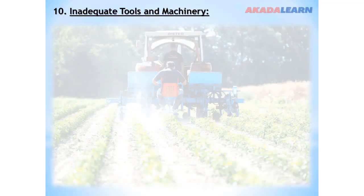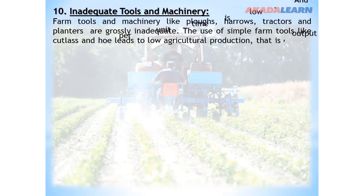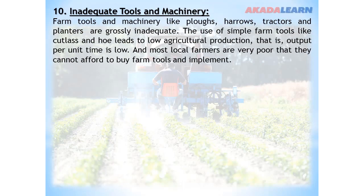Problem number ten: Inadequate tools and machinery. Farm tools and machinery like plows, harrows, tractors, and planters are grossly inadequate. The use of simple farm tools like cutlasses and hoes leads to low agricultural production, and most local farmers are very poor and cannot afford to buy farm tools and implements.